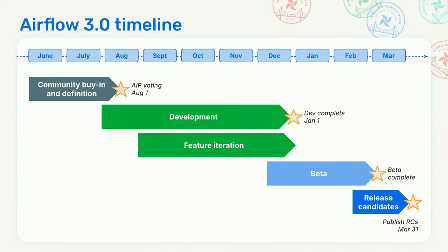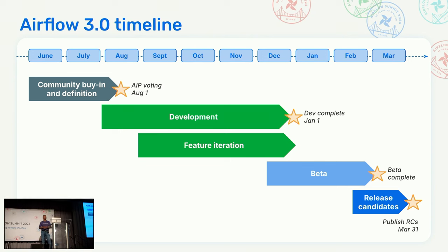When is all this happening? We started very active discussions on the 20th of April, and over the last three months we've had a tremendous amount of community activity — lots of discussions, voting on well over 15 Airflow Improvement Proposals, lots of comments, and far more. We completed the set of AIPs around the first week of August, and now we are in the development phase. We expect to cut beta builds in January. The beta will run for a couple of months, and we plan to cut release candidates toward the end of March. This will then become GA after it passes the Apache voting process.